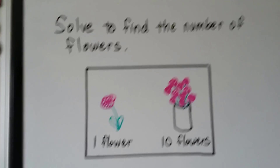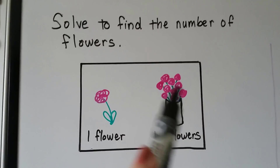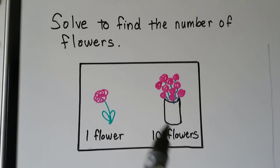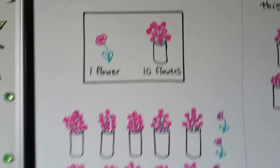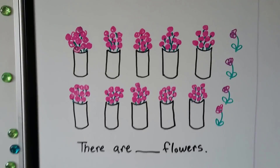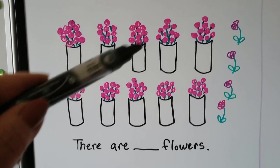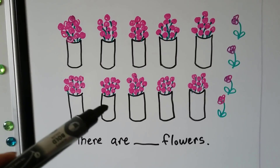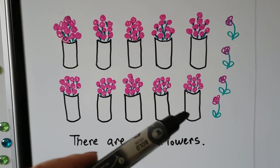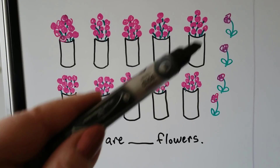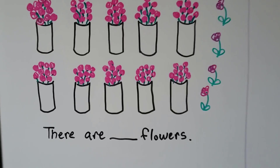Solve to find the number of flowers. We have a vase that's full of ten flowers, so each vase picture means ten and each single flower means one. We can count by tens: ten, twenty, thirty, forty, fifty, sixty, seventy, eighty, ninety, one hundred. Then we have some single flowers on the side: one hundred, one hundred one, one hundred two, one hundred three, one hundred four. There are one hundred four flowers.